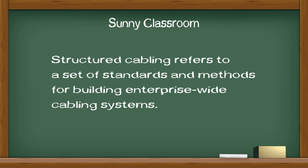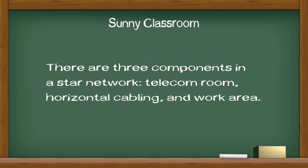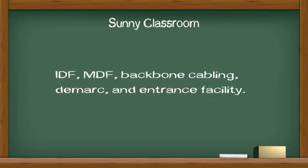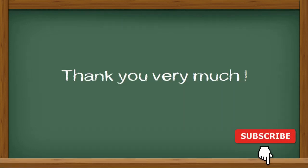Structured cabling refers to a set of standards and methods for building enterprise-wide cabling systems. There are three basic components in a star network: telecom room, horizontal cabling, and work area. These are basic building blocks for enterprise-wide structured cabling, along with more components such as IDF, MDF, backbone cabling, demarc, and entrance facility, which I will discuss in my next video. I hope this video is useful. Thank you very much. See you next time.